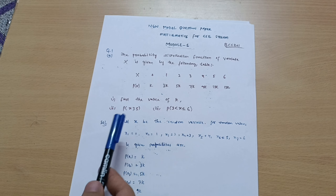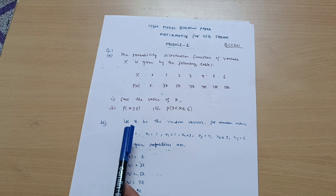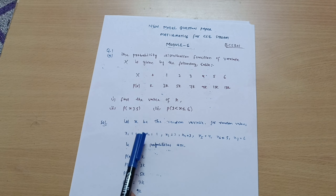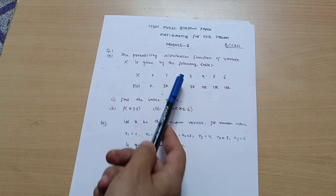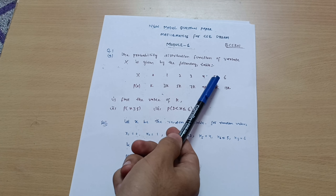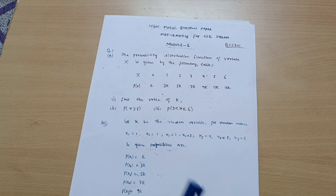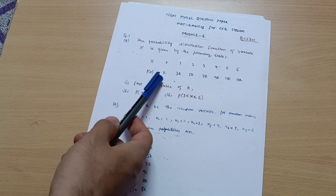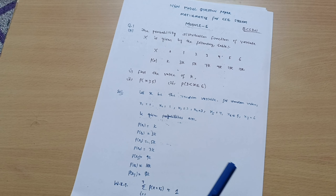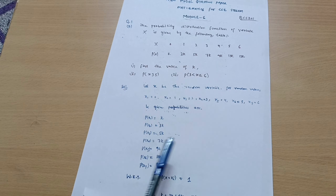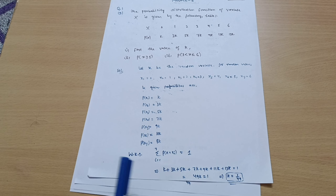While writing the solution, let X be the random variable with values x₁ = 0, x₂ = 1, x₃ = 2, x₄ = 3, x₅ = 4, x₆ = 5, and x₇ = 6 — that is what I have written here. The given probabilities are: P(x₁) = k, P(x₂) = 3k, P(x₃) = 5k, and so on as written.